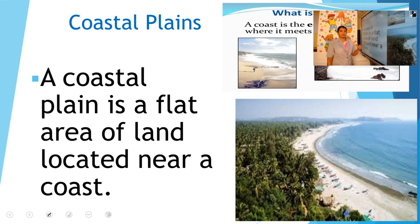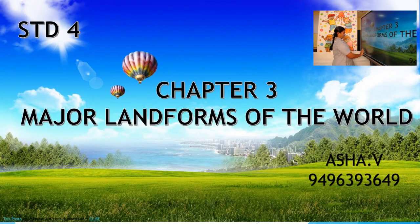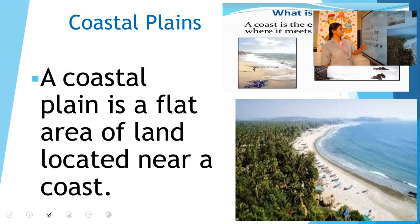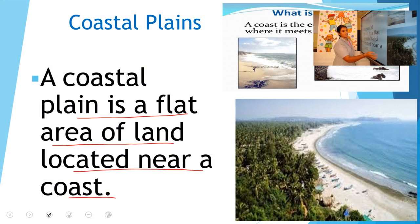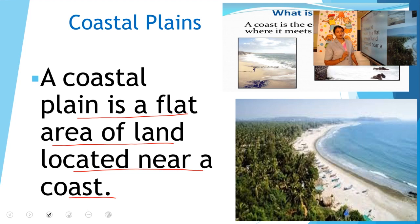So now we are going to learn about coastal plain. Coastal plain is a flat area of land located near a coast. These are the flat areas of land located near a coast, so it is a coastal plain.